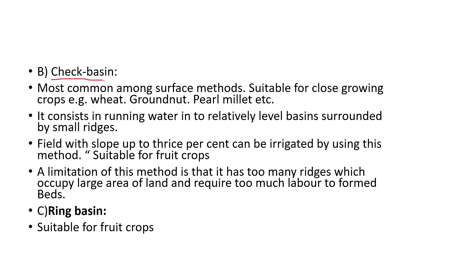The second method is checked basin — the most common among surface methods. It is suitable for close-growing crops like wheat, groundnut, and pearl millet. It consists of running water into relatively level basins surrounded by small ridges. Fields with slope up to 3% can be irrigated using this method, with a limitation of high labor cost for creating ridges. The next method is ring basin, which is suitable for fruit crops.